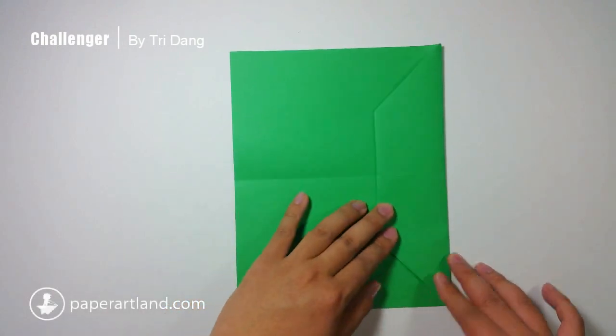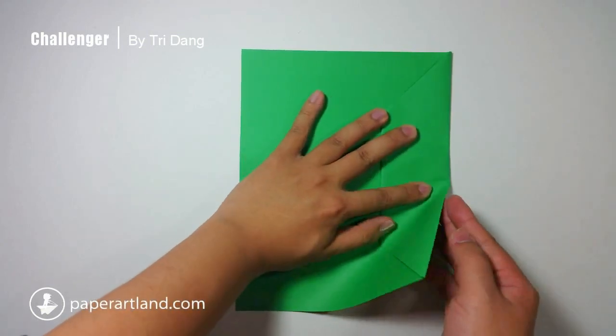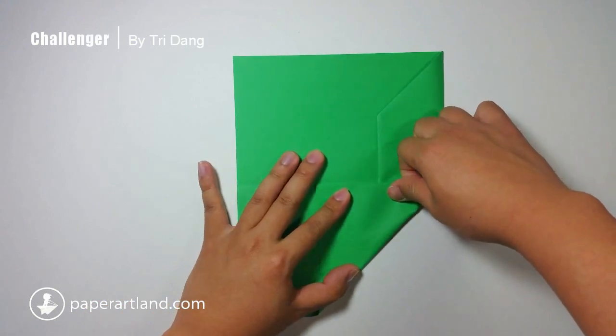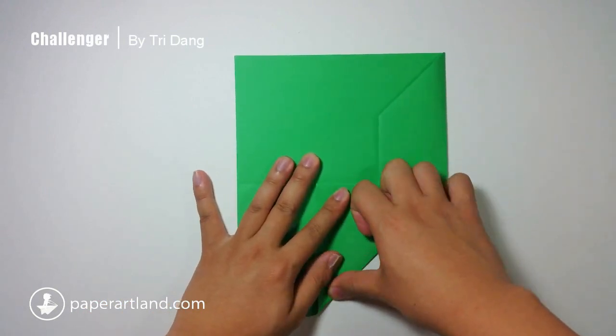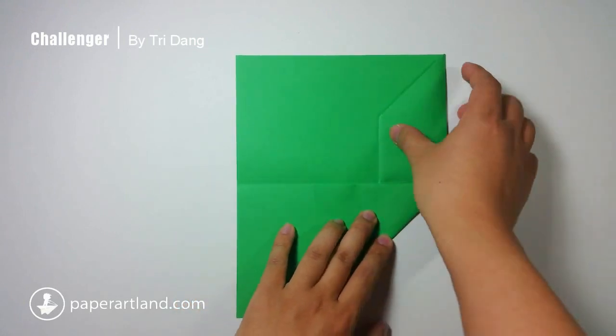And now, I start from this edge, fold it to the center crease. And next, I repeat the same fold for this side.